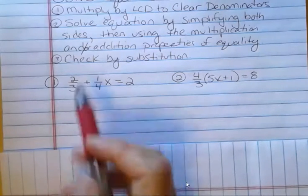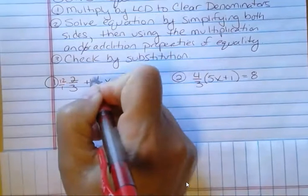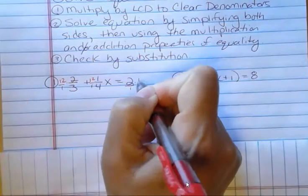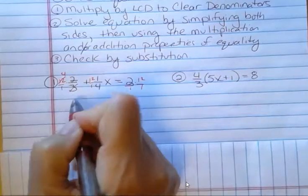The least common denominator for this problem is 12. So I'm going to multiply everything by 12. I'm saying 12 over 1. And then 3 goes into 12 4 times. 2 times 4 is 8.